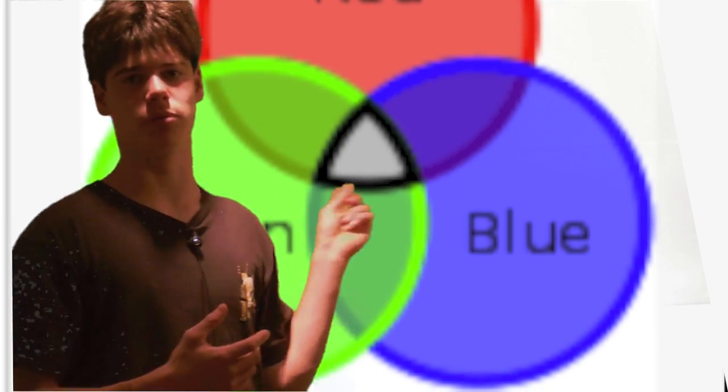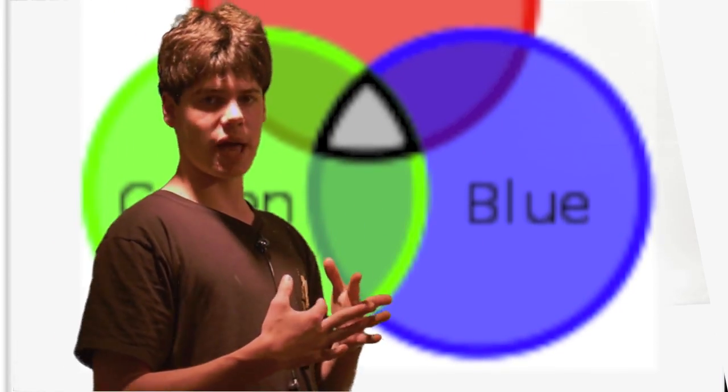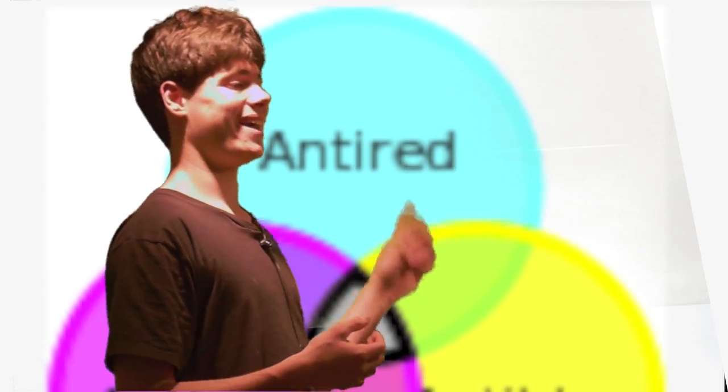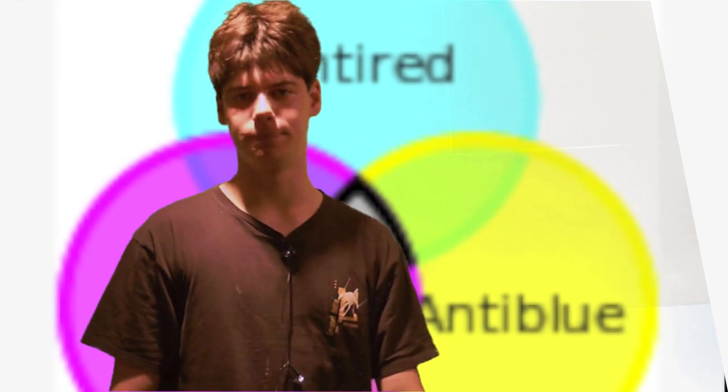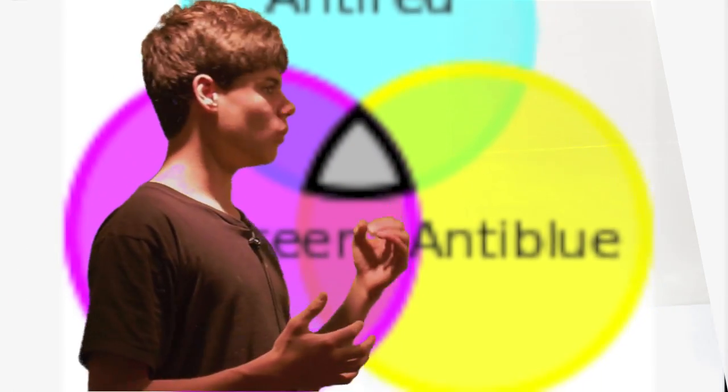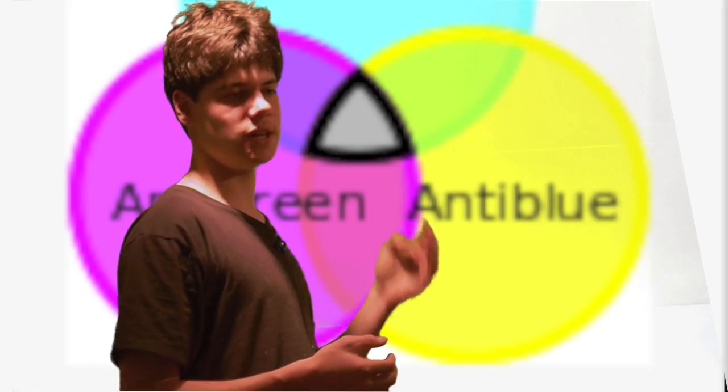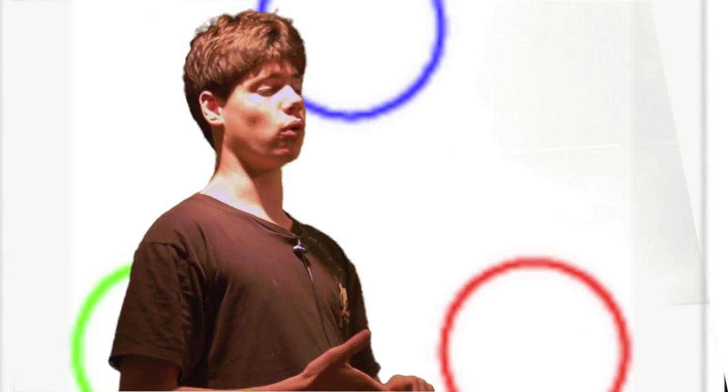And it can also be anti-red, anti-green, and anti-blue, which are the reverse colors. So say we have any baryon with a red, green, and a blue quark.